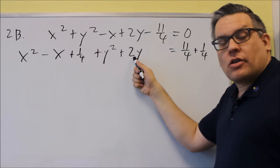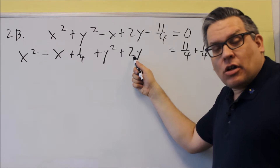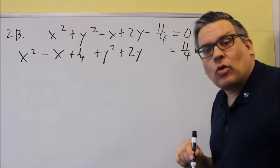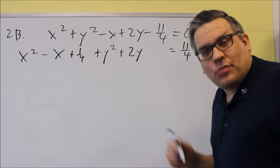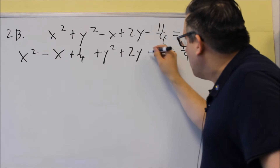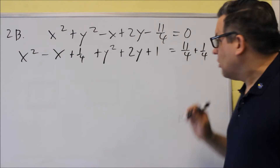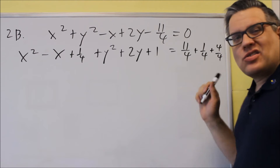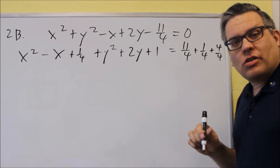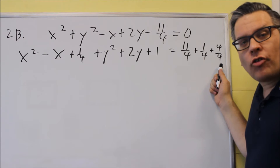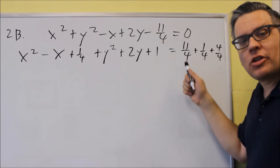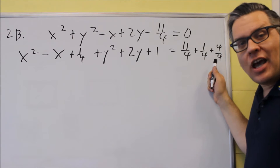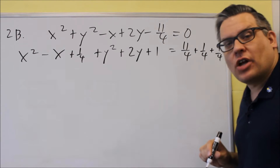Next, for the 2y term, the coefficient is 2. I divide that by 2 to get 1, then square it to still get 1. So I add a plus 1 here. I also add 1 on the other side, but I'll convert it to 4 over 4 to put it in common denominators right away, so I can add the fractions easily since they all have the same denominator.